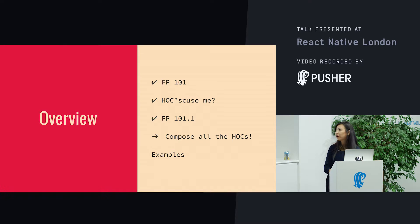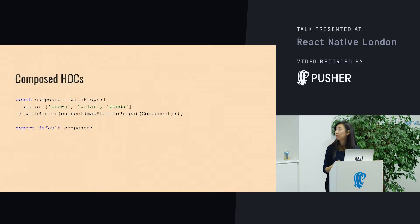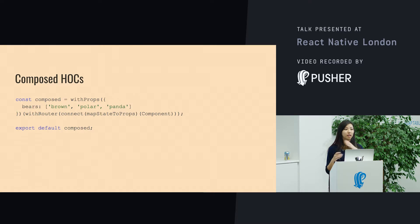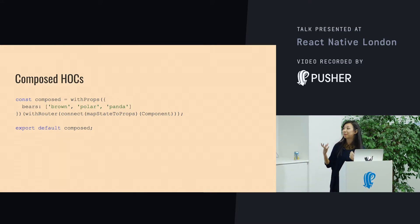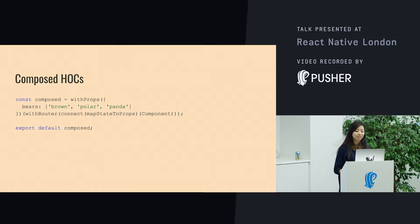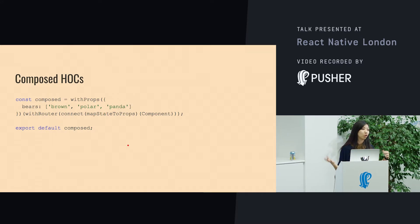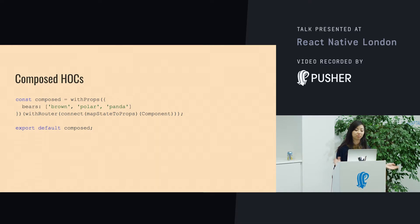We use a library at Wonderbly called Recompose, which makes chaining up of higher-order components really nice. This is an example of not using Recompose — you can see it's a bit confusing. There are loads of nested function calls, and if you're going to wrap more higher-order components on it, it's just going to look horrible and messy.